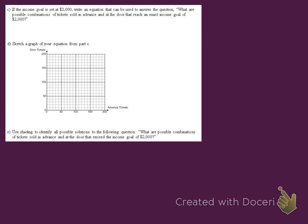Letter C, if the income goal is set at $2,000, write an equation that can be used to answer the question: what are the possible combinations of tickets sold in advance and at the door that reach an exact income goal of $2,000? It says we're writing an equation, and our goal is $2,000. Nothing else has changed. We're still charging $10 in advance and $15 at the door. So the only thing that needs to change is we'll replace the letter I with 2,000.